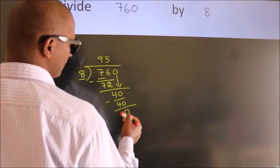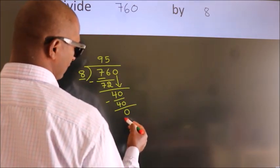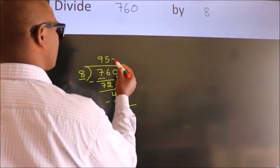After this, no more numbers to bring it down. And we got remainder 0. So this is our quotient.